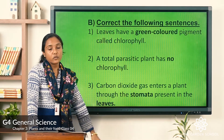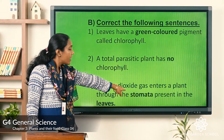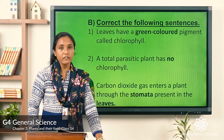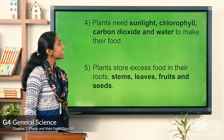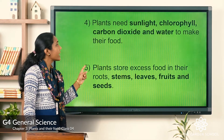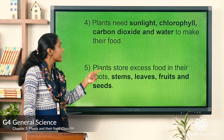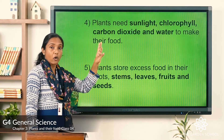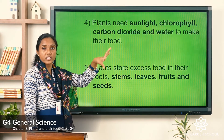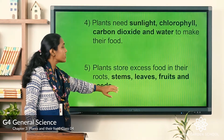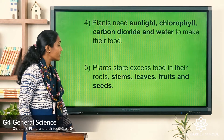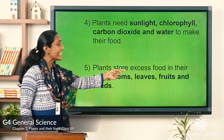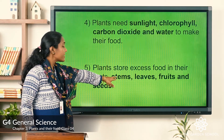Answer four: plants need sunlight, chlorophyll, carbon dioxide, and water to make their food — not only sunlight; they need all four. Answer five: plants store excess food in their roots, stems, leaves, fruits, and seeds — not only in the roots.